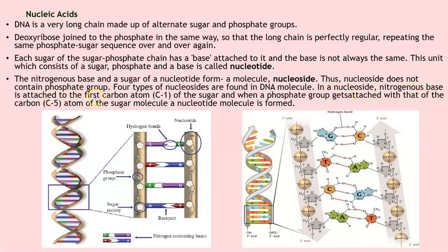In a nucleoside, the nitrogenous base is attached to the first carbon atom (C1) of the sugar. When a phosphate group gets attached to the fifth carbon atom of the sugar molecule, a nucleotide is formed. So at the first carbon position you have the base attached, and at the fifth carbon position you have the phosphate group attached.